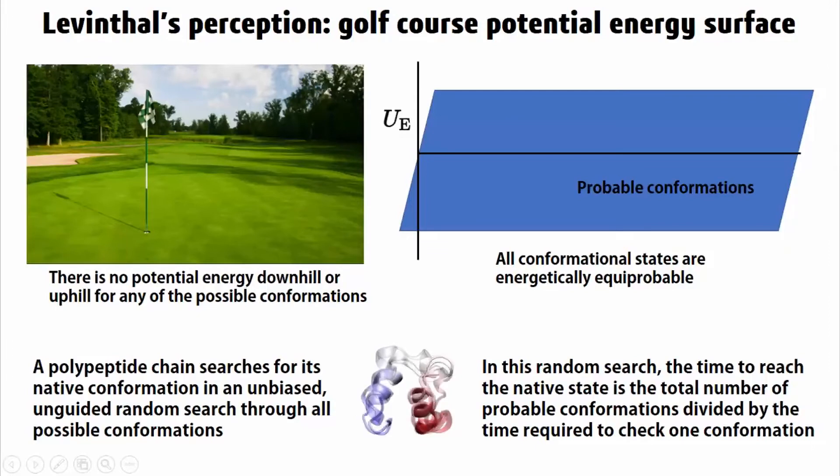Leventhal imagined what we call a golf course model of potential energy landscape. Simply speaking, there are no uphills or downhills of potential energy for different conformations. All the conformational states are therefore energetically equiprobable. In a golf course potential energy landscape, the free energy of transition between any two states is given by their potential energy difference, which is, in this case, always zero.